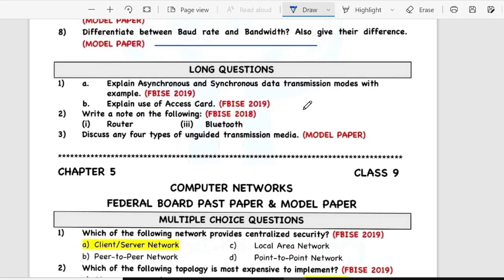Long may explain asynchronous and synchronous data transmission modes with example. B here explain use of access cord. Second, write a note on the following: router and Bluetooth. Third, discuss any four types of unguided transmission media.